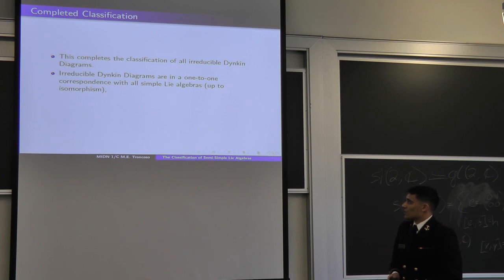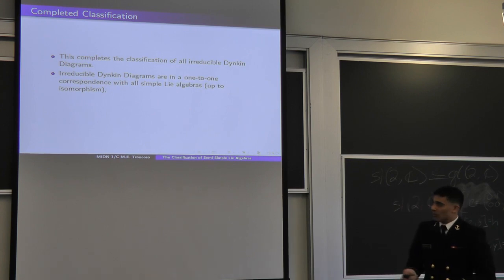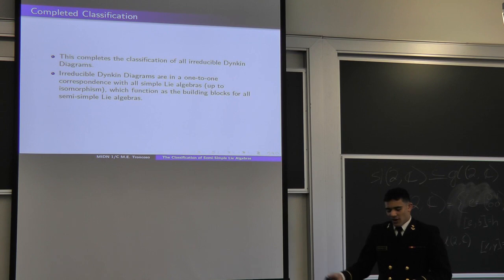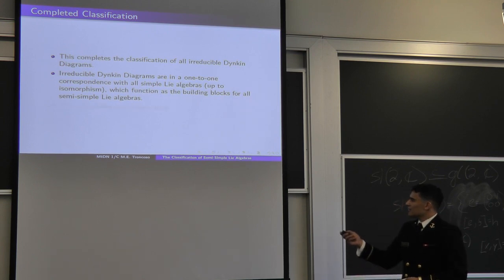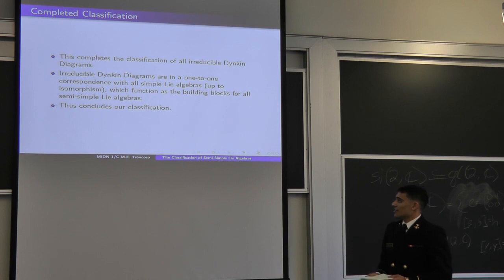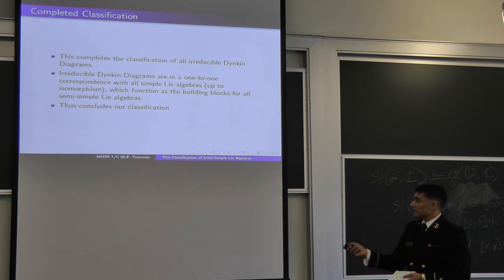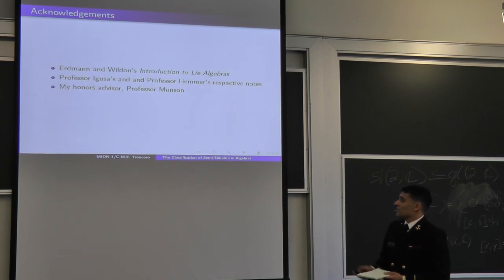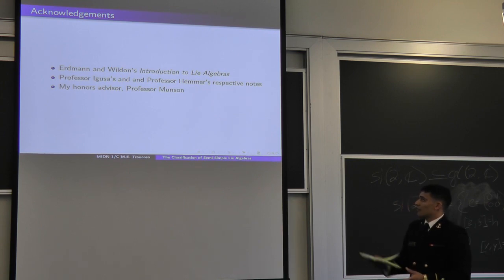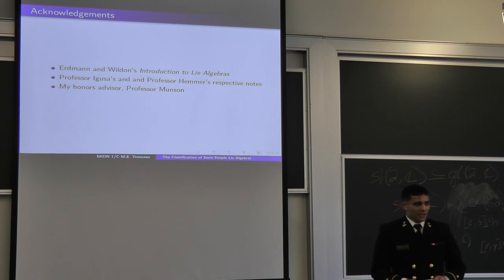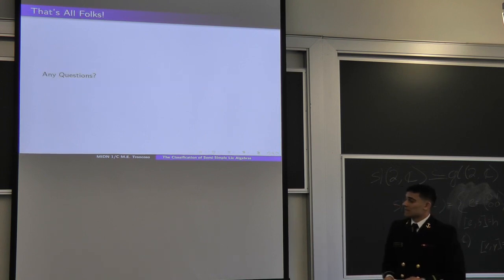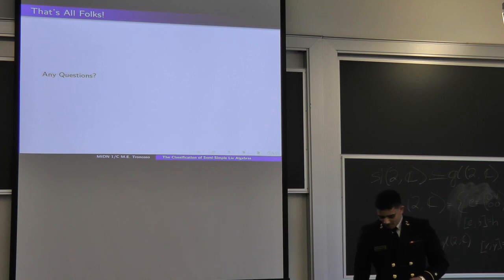The irreducible Dynkin diagrams are in one-to-one correspondence with all simple Lie algebras up to isomorphism. Simple Lie algebras are our building blocks of semi-simple Lie algebras. We now know exactly how to describe every simple Lie algebra, so we know how to describe every semi-simple Lie algebra. Acknowledgements: I used Erdmann and Wildon's introduction to Lie algebras, Professor Goose's notes online, and my honorary advisor Professor Munson. Any questions?